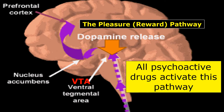Psychoactive drugs enter the brain through the bloodstream and they activate a pathway in the brain called the pleasure pathway or the reward pathway. This starts at the ventral tegmental area, also known as the VTA, which is at the very top of the brain stem. This part of the brain releases the chemical dopamine, which travels through the pathway to an area in the forebrain called the nucleus accumbens, and from there the pathway goes up into the prefrontal cortex, the thinking and memory part of the brain.